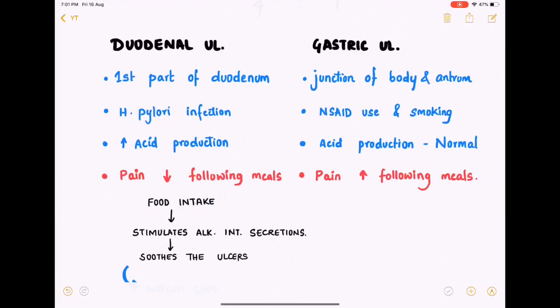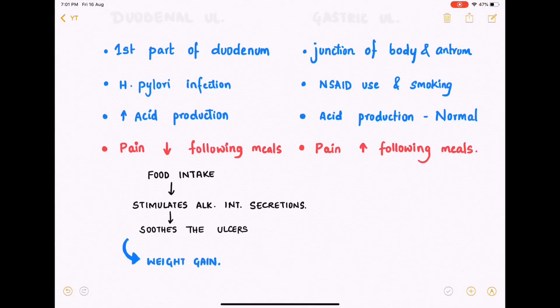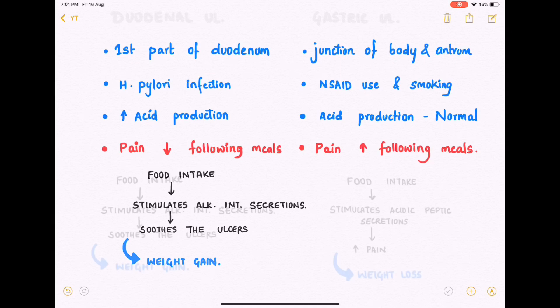Talking about the most common clinical feature of peptic ulcer disease — epigastric pain — in duodenal ulcers the pain decreases following intake of meals. This is because food intake stimulates the alkaline intestinal secretions, and this alkaline secretion has a soothing effect on the ulcers. The patient might consume food more frequently, which may lead to weight gain.